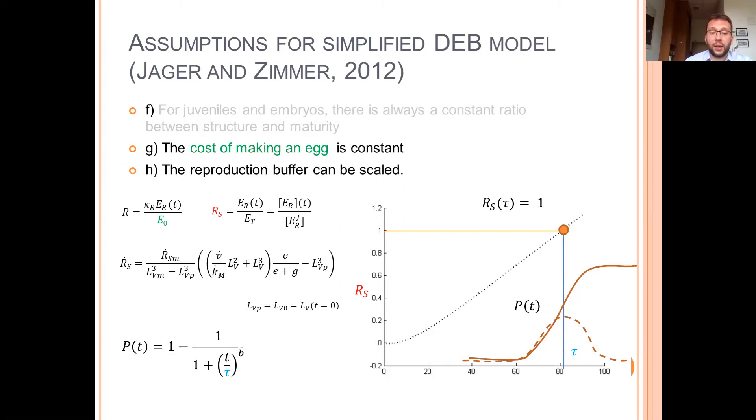And the reproduction rate can be scaled by this value. So when r is equal to one, the pupation occurs. This is basically the reason we scale it.